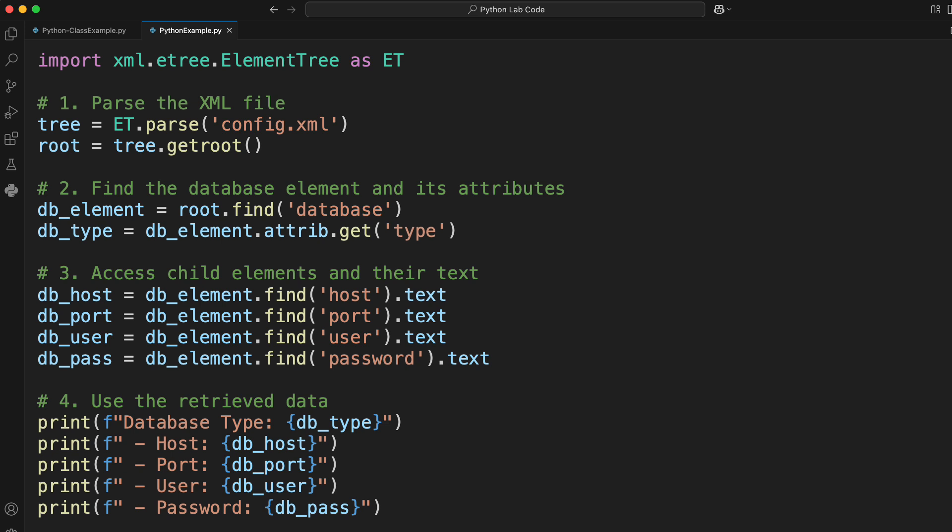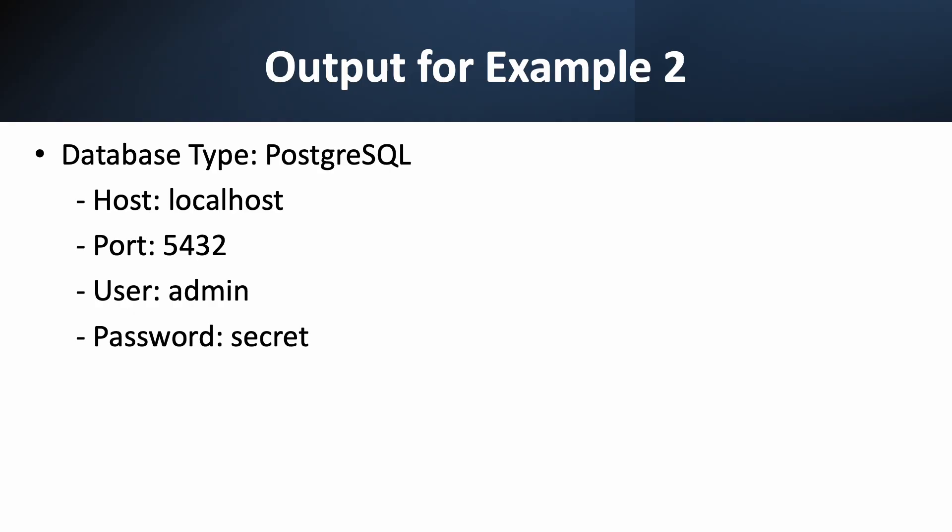Here's the solution for our configuration file problem. Again, we start by parsing the file and getting the root. Then we find the specific database element using root.find('database'). To get the attribute, we use .attrib.get('type') on the db element. This gives us the value of the type attribute. After that, it's business as usual. We use find and .text to get the values for the host, port, user, and password, just like we did with our movie example. Finally, we print out the results. We successfully extracted not only the text inside the elements, but also the attribute from the database element. This shows how powerful ElementTree is for handling different parts of an XML document — both the text inside a tag and the attributes associated with that tag.